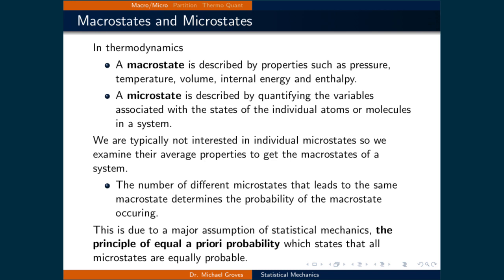We are generally not interested in individual microstates since it's the macrostate of a system that we measure as a property of the system. One major assumption in statistical mechanics is the principle of equal a priori probability, which states that all microstates are equally probable. This means that the number of different microstates that are members of the same macrostate determines the probability of that macrostate occurring.